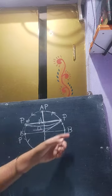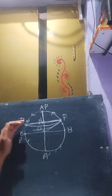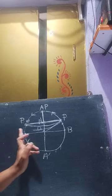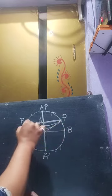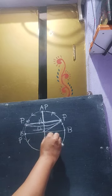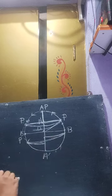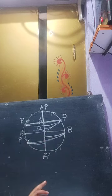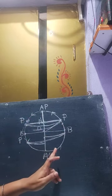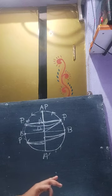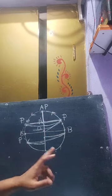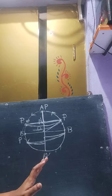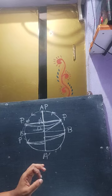If a particle moves with uniform speed along the circumference of a circle, the straight-line motion of the projection of the particle on the diameter of the circle is called simple harmonic motion. The projection is doing nothing but moving to and fro. As the particle moves with uniform velocity along the circumference, we say it is performing simple harmonic motion, and this circle is called the circle of reference of the simple harmonic motion. This is the kinematical definition of SHM.